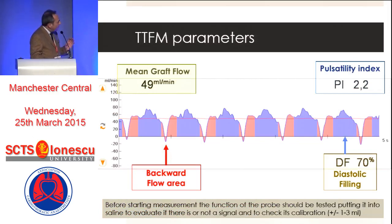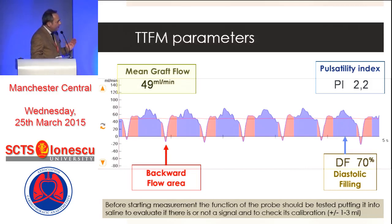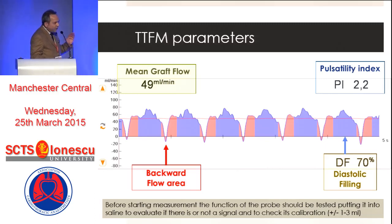What can transit time flow measurement give you? The equipment provides a curve with several parameters. First, the mean graft flow — shown as the red line above the zero flow line — is an average evaluation of flow into the graft, given in milliliters per minute. It is a true flow, not a velocity. Then there is the pulsatility index, derived from the formula: (maximum flow minus minimum flow) divided by mean flow. This is a very important parameter because it gives directions for observing the fate of the graft.